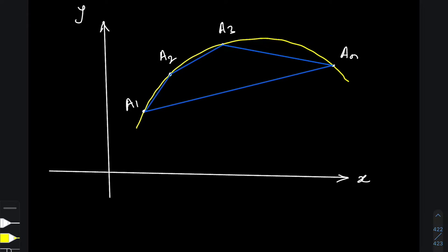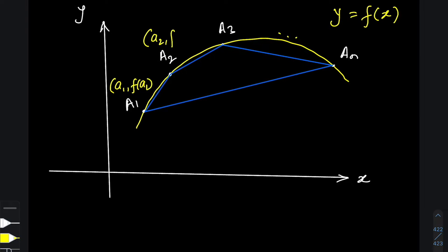Here we have a polygon on screen, which is basically made out of joining the points a₁, a₂, a₃, ... aₙ on this concave down curve. The yellow curve is basically a function y = f(x). On this particular polygon, I choose the coordinates of a₁ as (a₁, f(a₁)), the coordinates of a₂ as (a₂, f(a₂)), the coordinates of a₃ as (a₃, f(a₃)), and so on.